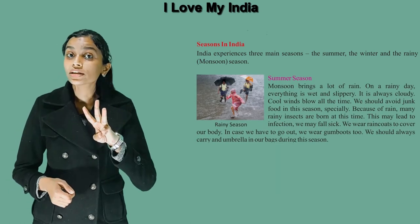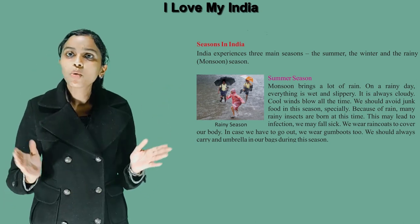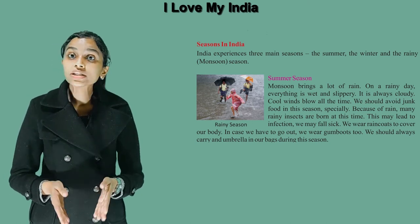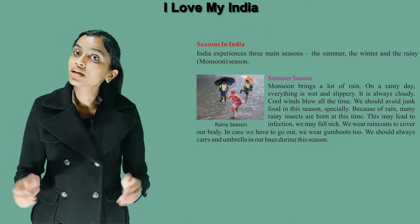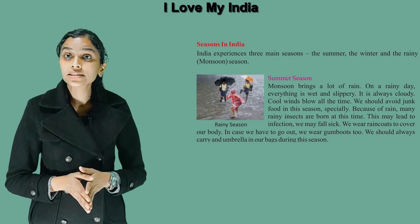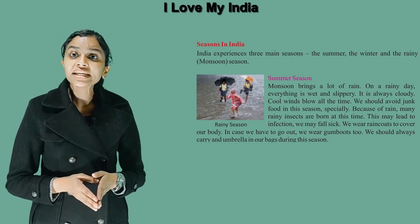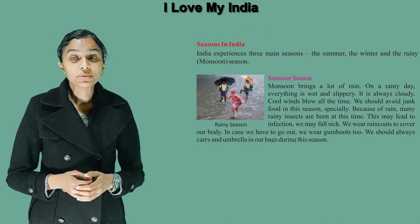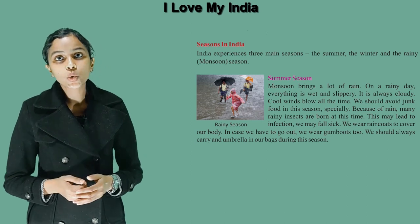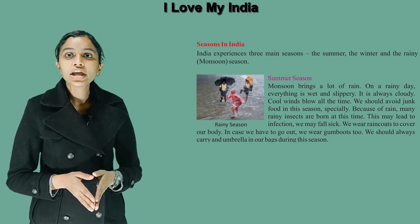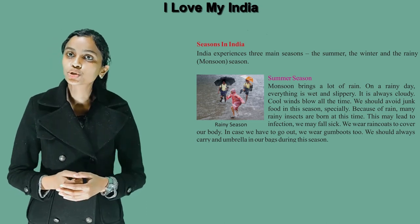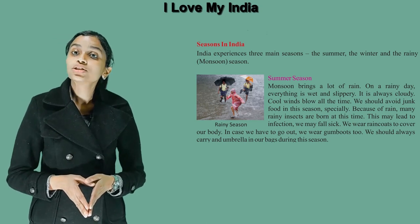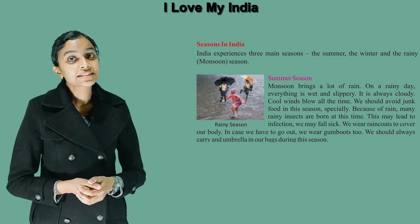The third one is the rainy season. Monsoon brings a lot of rain. On a rainy day everything is wet and slippery. It is always cloudy and cool winds blow all the time. We should avoid junk food in this season, especially because of rain, as many rainy insects are born at this time and this may lead to infection. We may fall sick. We wear raincoats and gum boots to cover our body when we go out. We should always carry an umbrella in our bags during this season.